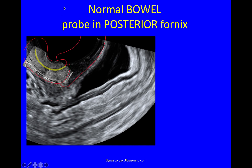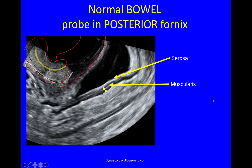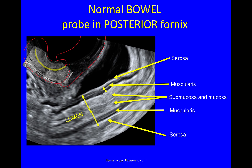And what you can see, outlined nicely by some fluid, is the different layers of the bowel. The white is the serosa. This hypoechoic area comprising two layers is the muscularis — the outer longitudinal layer and the inner circular layer — with a little bit of fibrotic tissue between them. This is a normal muscularis, covered by submucosa and mucosa. The same on the other side, and then this is the posterior wall muscularis and serosa. So the lumen of the bowel is just there.